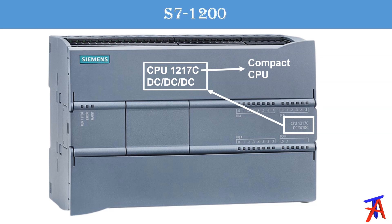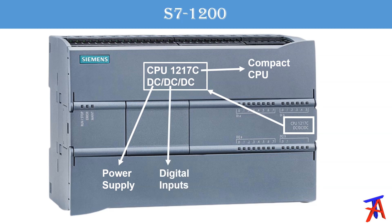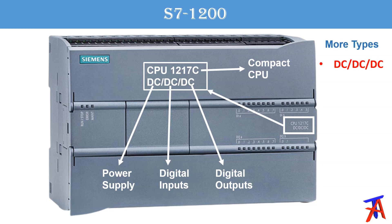The 'C' denotes compact CPUs, meaning it has onboard digital inputs and digital outputs. There are three 'DC' designations on the PLC: the first DC means the power supply is 24V DC, the second DC means the digital inputs are 24V DC, and the third DC means the digital outputs are transistor-type DC outputs. Different variants available are DC/DC/DC, DC/DC/relay, and others.